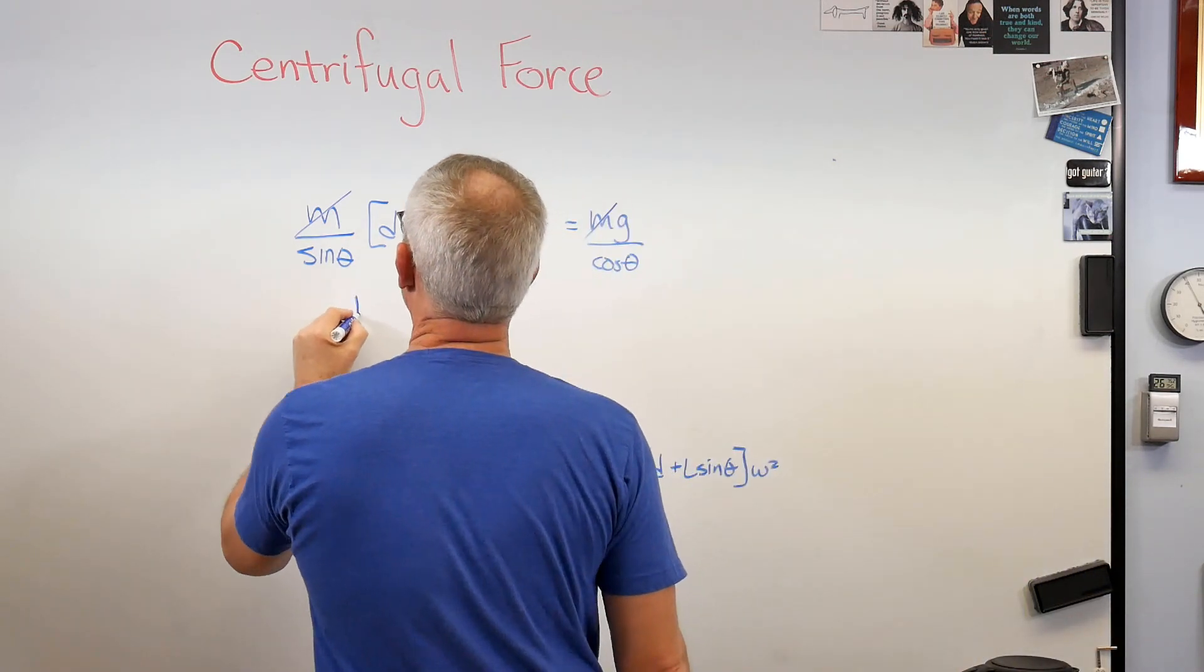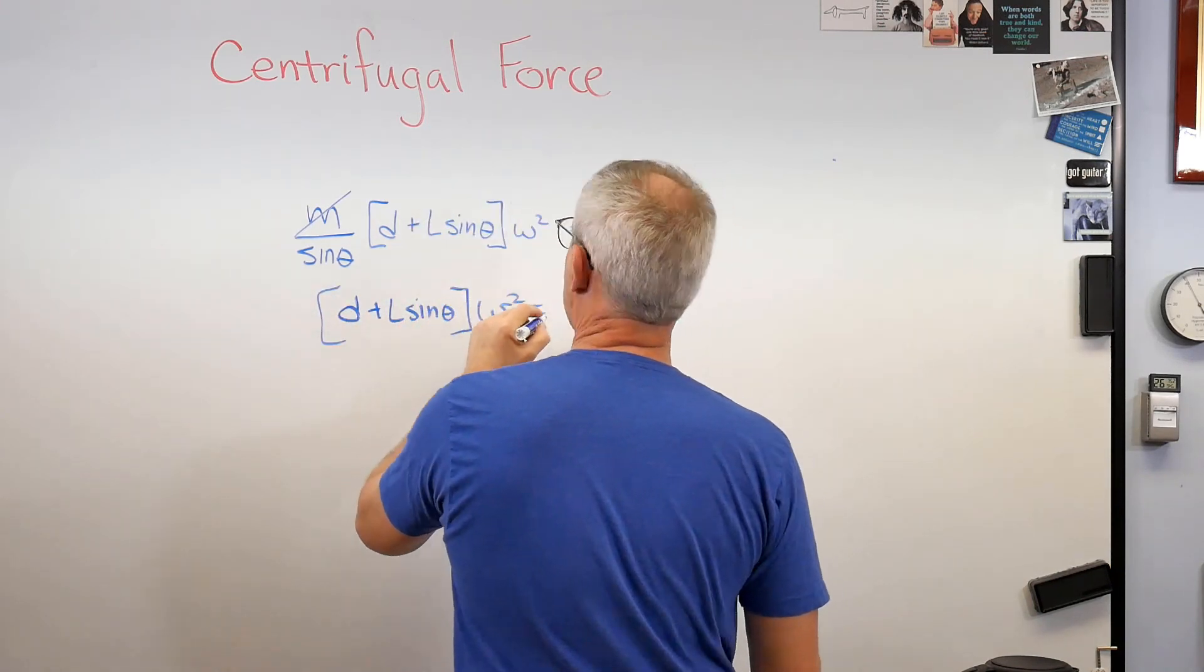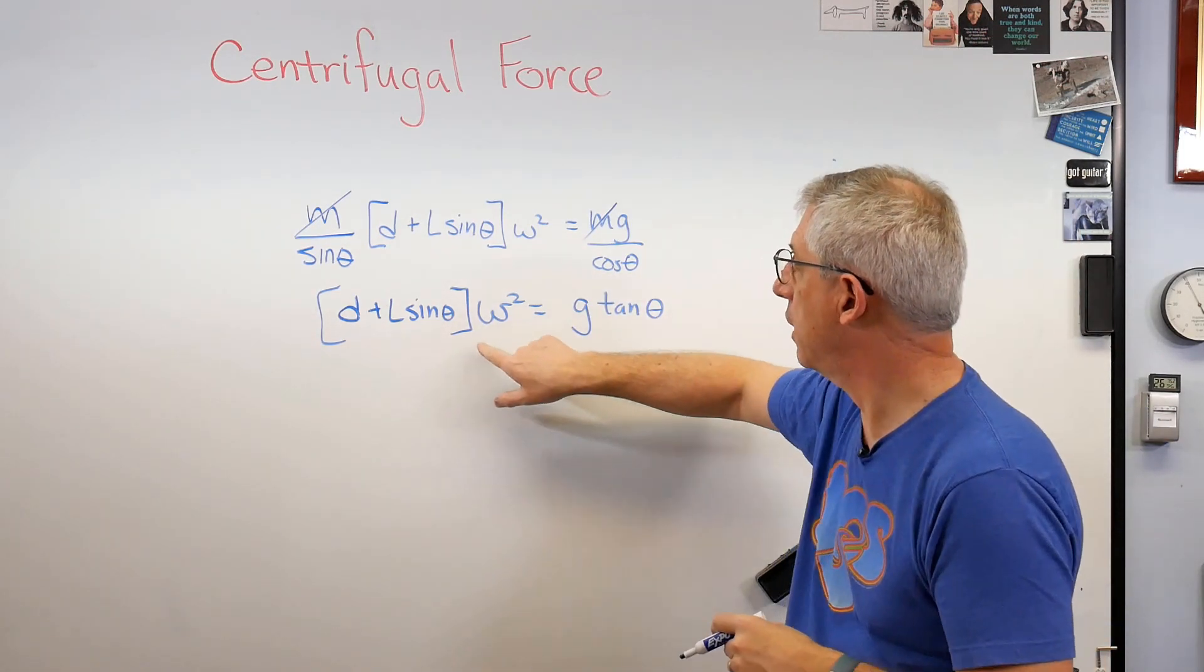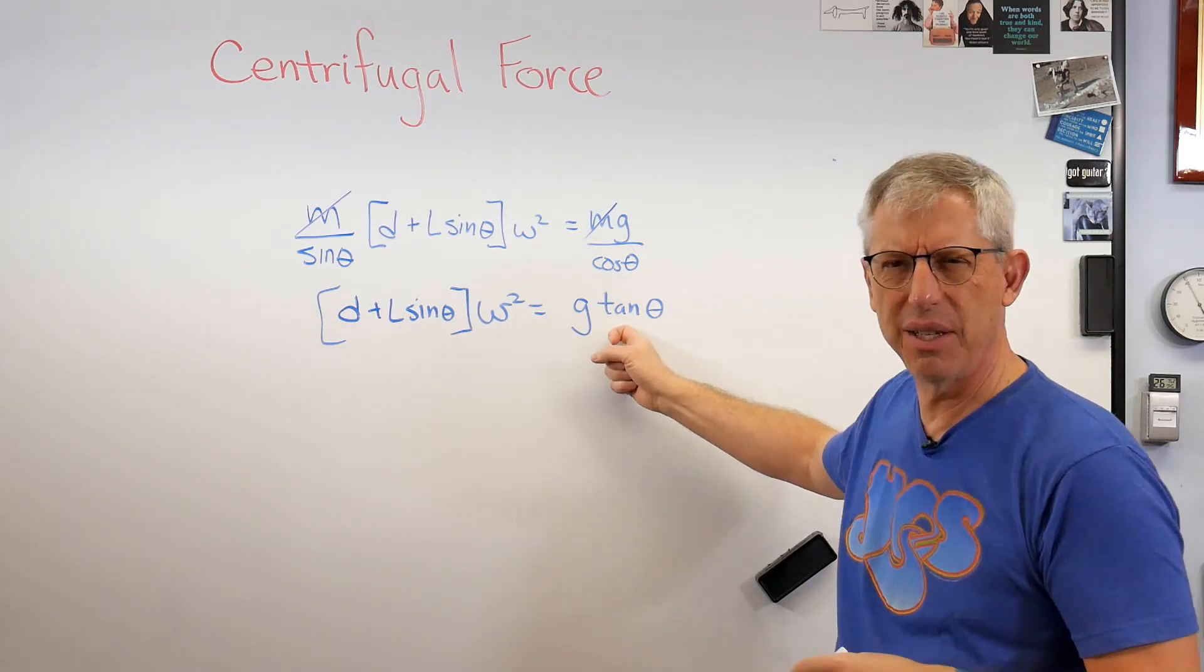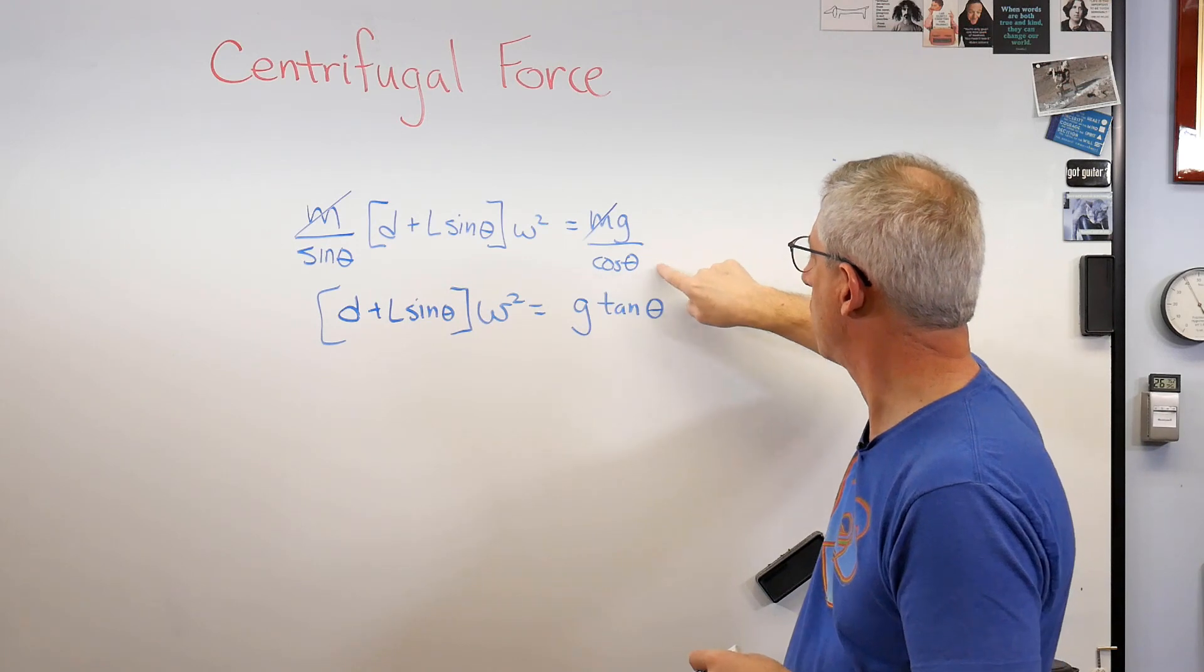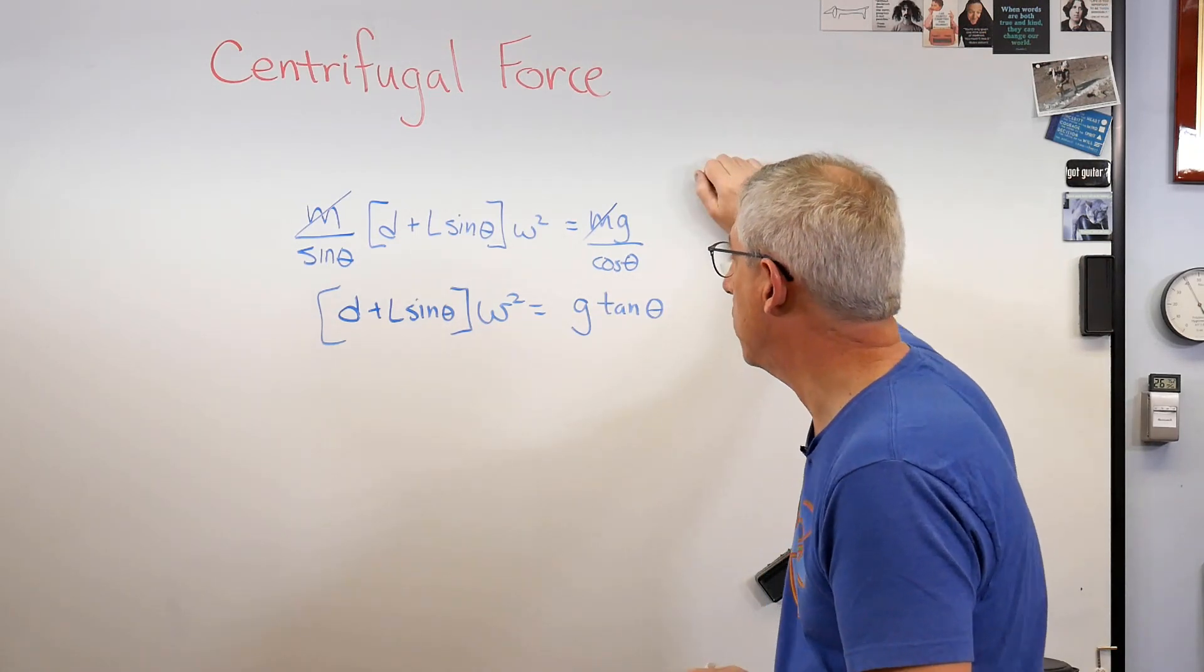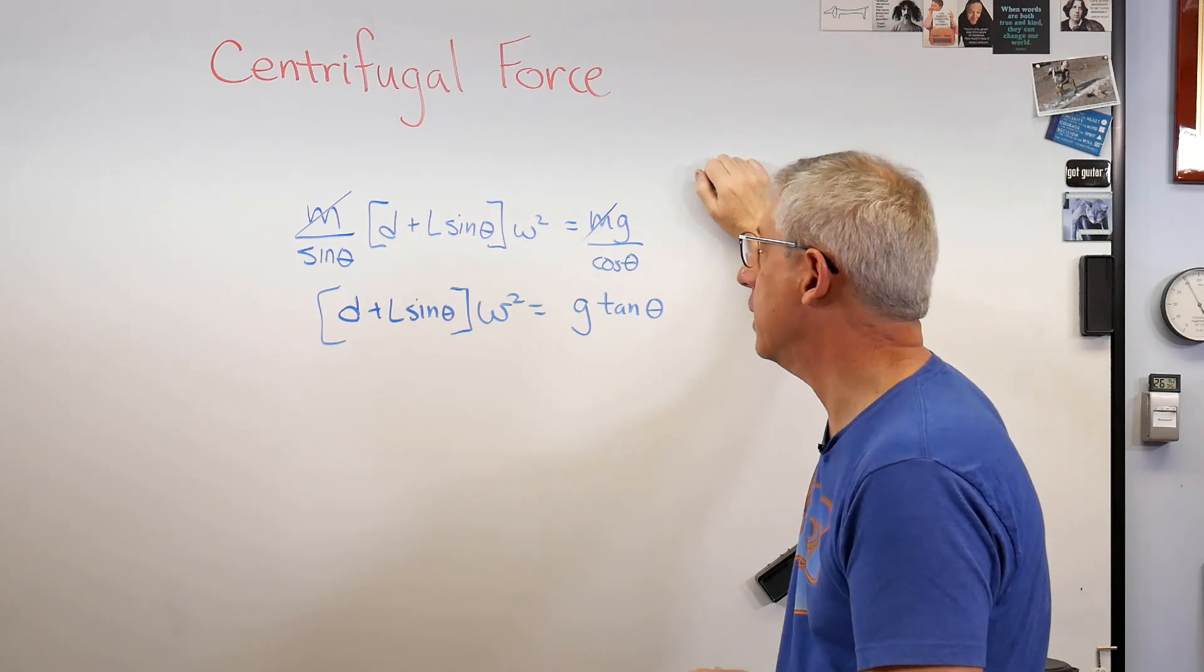So let's see. I'm going to get D plus L sine theta. All right. So the expression now, D plus L sine theta, that whole thing times omega squared equals G tangent theta. Where'd the tangent come from? Well, sine, if I multiply it through, I get sine over cosine. Sine over cosine is tangent. And there we go. All right. So there's no good way to solve this that I can think of. Well, no, there really isn't.